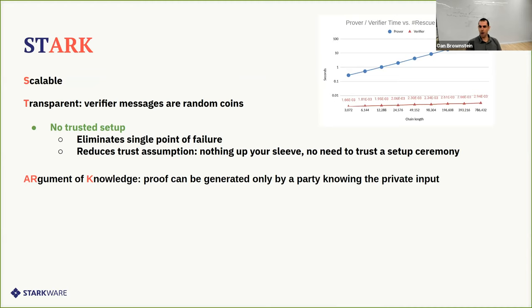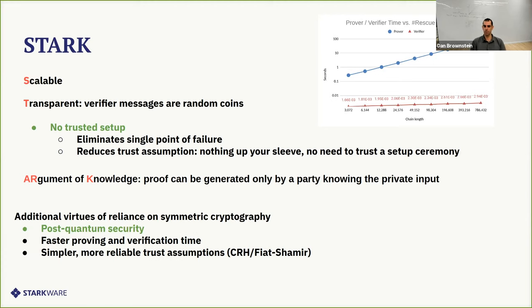It is an argument of knowledge, meaning that proof can only be generated by party knowing private inputs, not just their existence. Basically means that there is an algorithm that can extract this private output, an efficient algorithm. And there is no public key cryptography involved in a STARK protocol, only very lean cryptography, basically collision-resistant hash functions. So it is post-quantum secure. It's really fast, as I mentioned before, and it's based on reliable trust assumptions. So these are the properties of a STARK system.